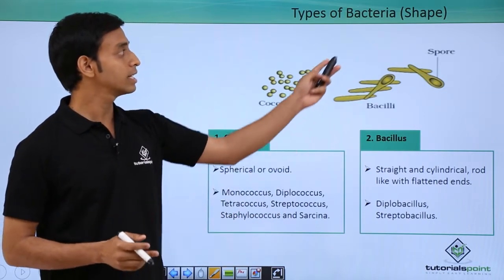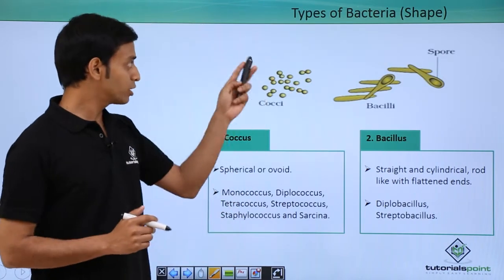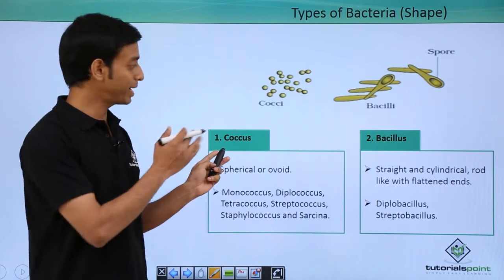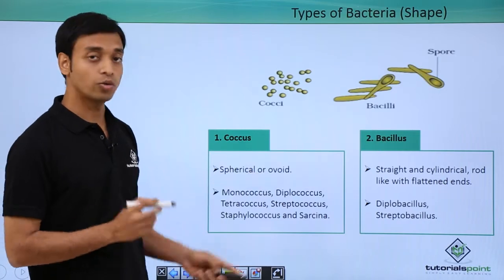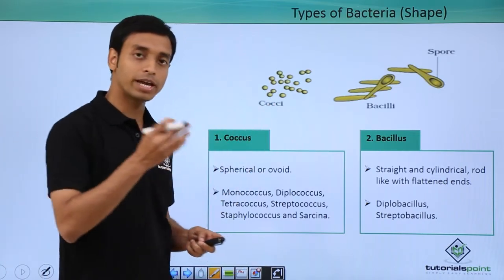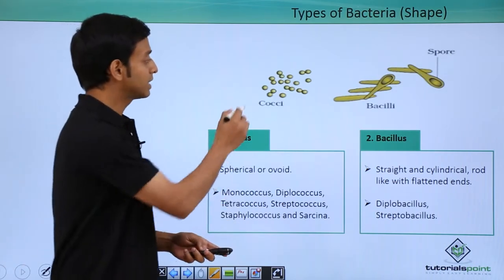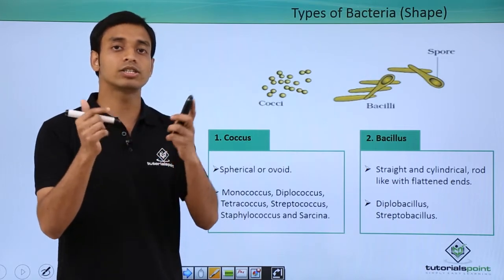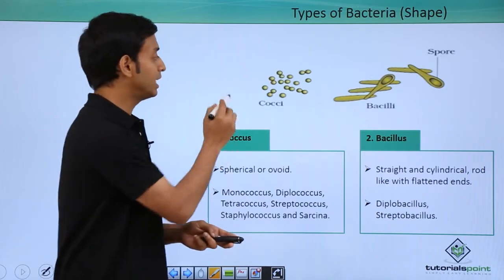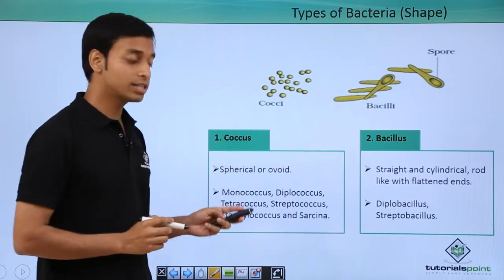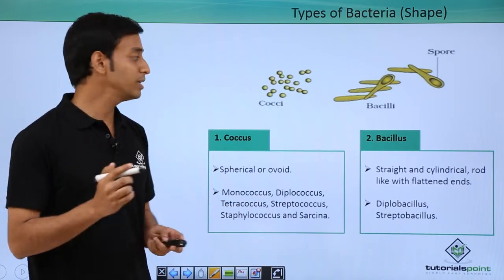The first type we are going to discuss is the types of bacteria based on shape. The first shape-based type is known as coccus. These are spherical or ovoid in structure, as you can see in this picture. They can be monococcus, meaning single cells where each cell is singular — individual isolated cells not paired or attached to each other.